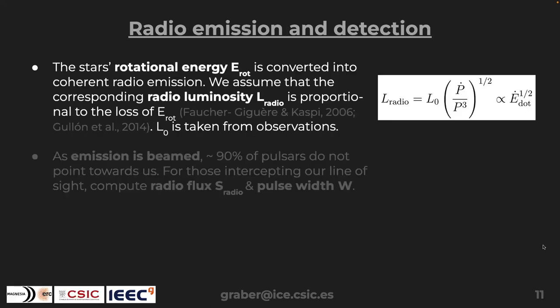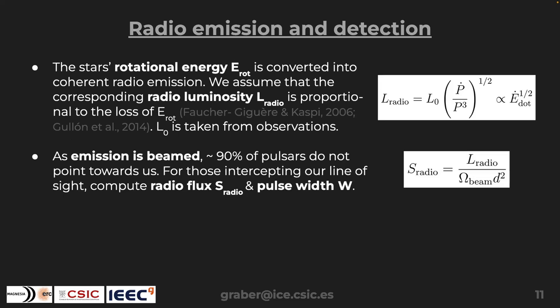We also need to model how bright these sources are. We assume the radio emission is powered by the rotational energy of the star, converting it via a proportionality factor into a radio luminosity. Additionally, because of the lighthouse beaming, if the beam doesn't sweep over you, you miss that pulsar. We estimate we lose about 90% of pulsars just from geometric effects. For those that do intercept our line of sight, we compute the radio flux from the distance and solid angle.